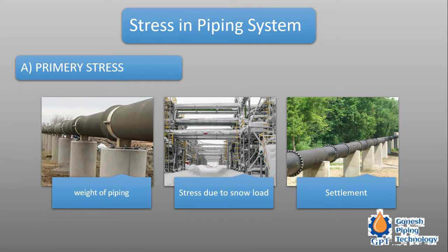Secondary stresses are those produced because of loads during operation. Primary stresses include: first, the weight of the pipe; second, stress due to snow loads — in cold countries where a heap of snow is deposited on the pipeline, there is an extra additional weight to be taken into consideration while designing the pipe.